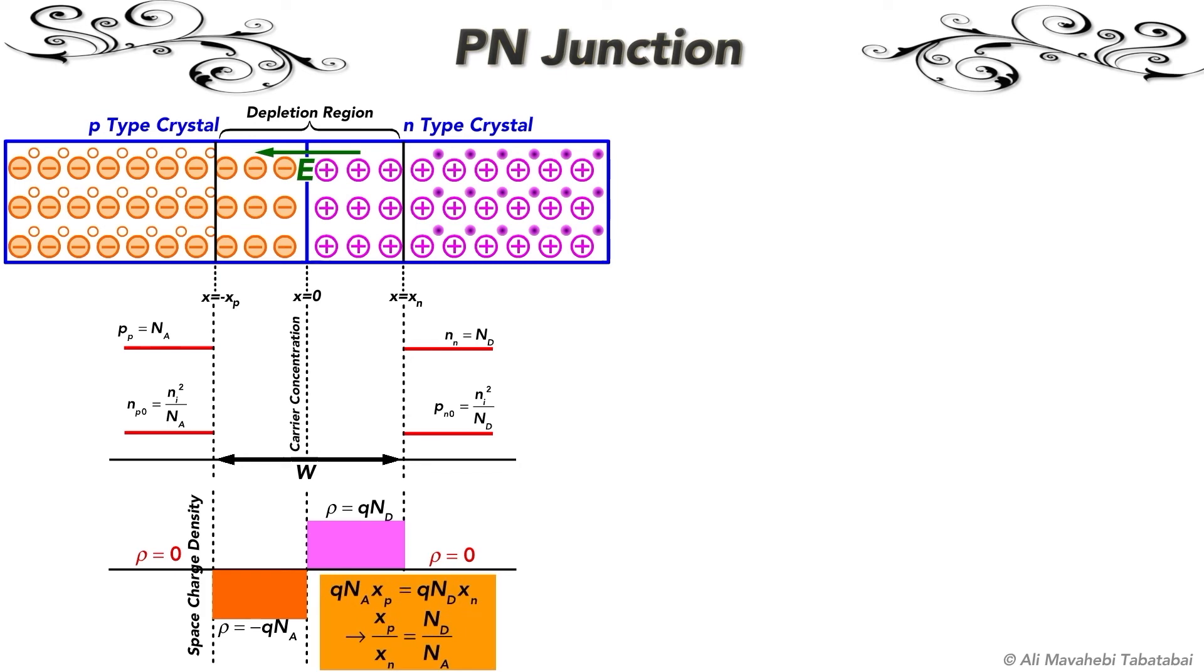By using this equation, you can find that if you have unequal doping, or let's say if the concentration of added acceptors Na is different from the concentration of added donors ND, then the width of the depletion layer will not be the same on the two sides. So to uncover the same amount of charge, the depletion layer will extend deeper into the more lightly doped material.